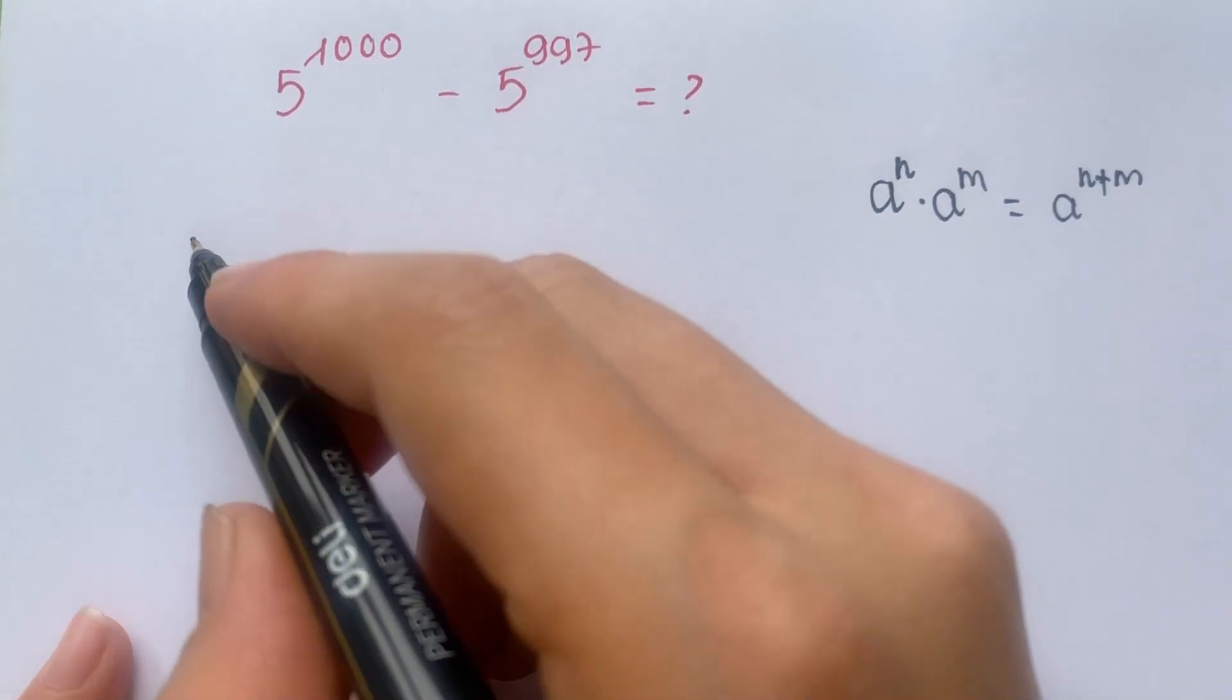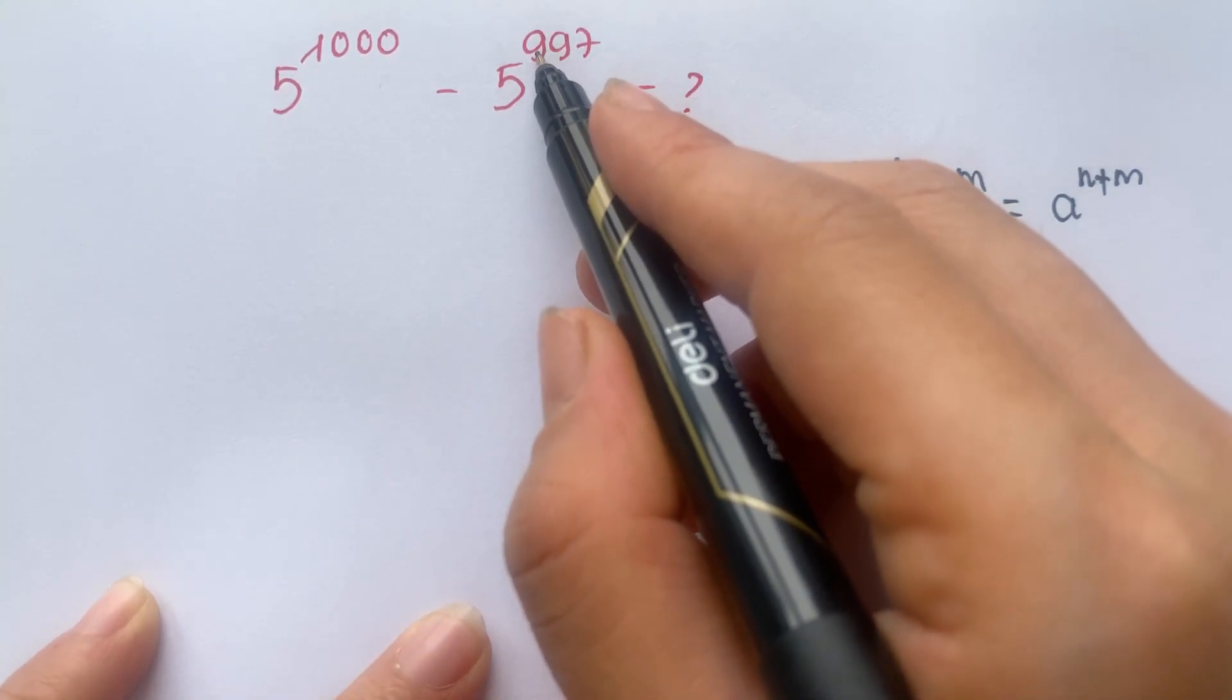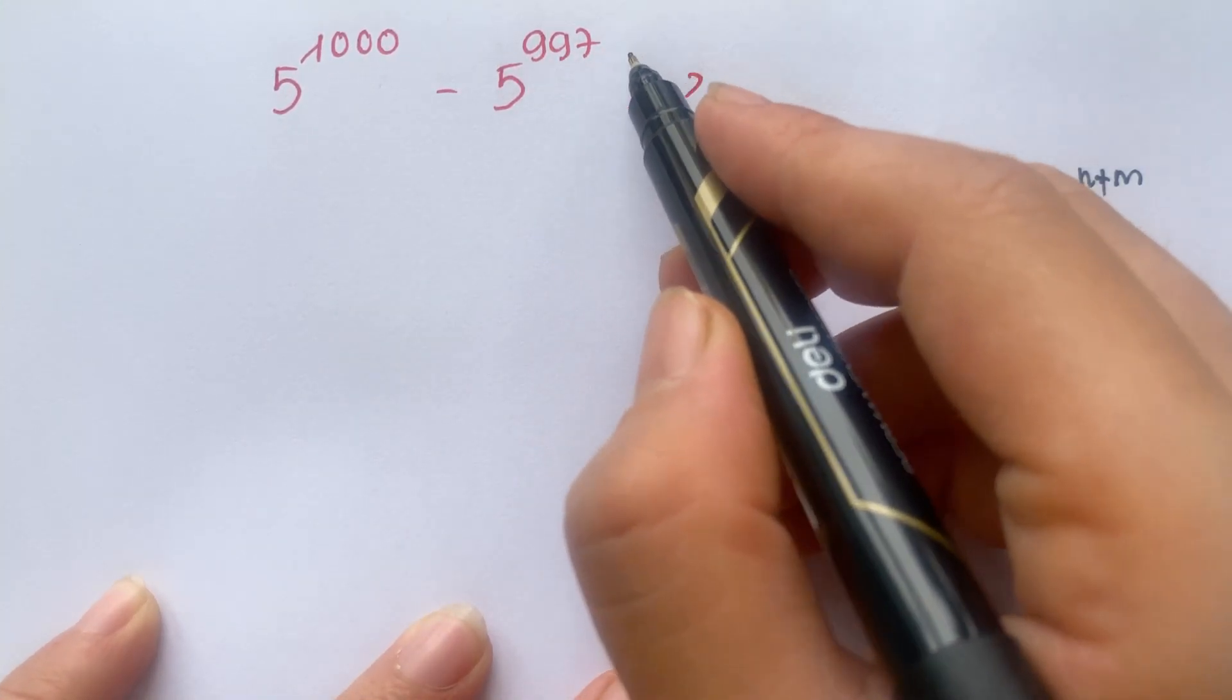And everyone look at that, 5 power 1000, you can break down 997 plus 3, right?